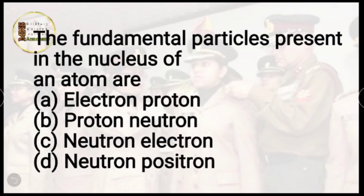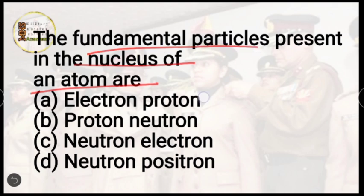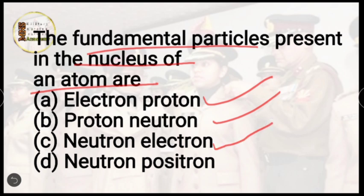Question number 15: the fundamental particles present in the nucleus of an atom are — electron, proton, neutron, or electron, neutron, positron? The correct answer is option B, proton and neutron.